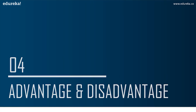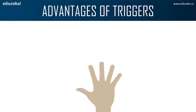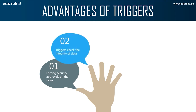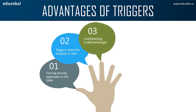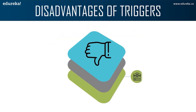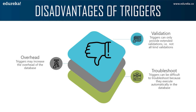Let's look at the advantages of triggers. First, they enforce security approvals on tables present in the database. Second, triggers provide another way to check the integrity of data. Third, triggers counteract invalid transactions. Fourth, triggers handle errors from the database layer. Finally, triggers are useful for inspecting data changes in the table. As for disadvantages: triggers can only provide extended validation — not all kinds of validations. For simple validations, you cannot use NOT NULL, UNIQUE, CHECK, and FOREIGN KEY constraints in a trigger. Next, triggers may increase the overhead of a database. Finally, triggers can be difficult to troubleshoot because they execute automatically in the database and may not be visible to client applications.